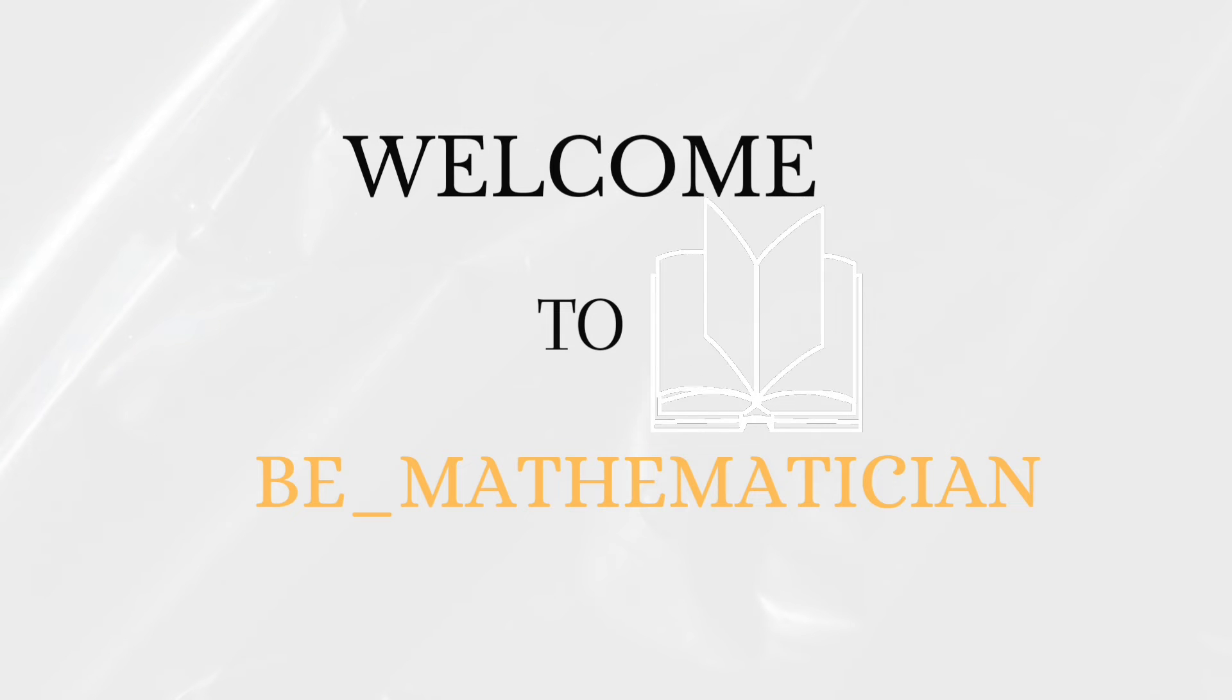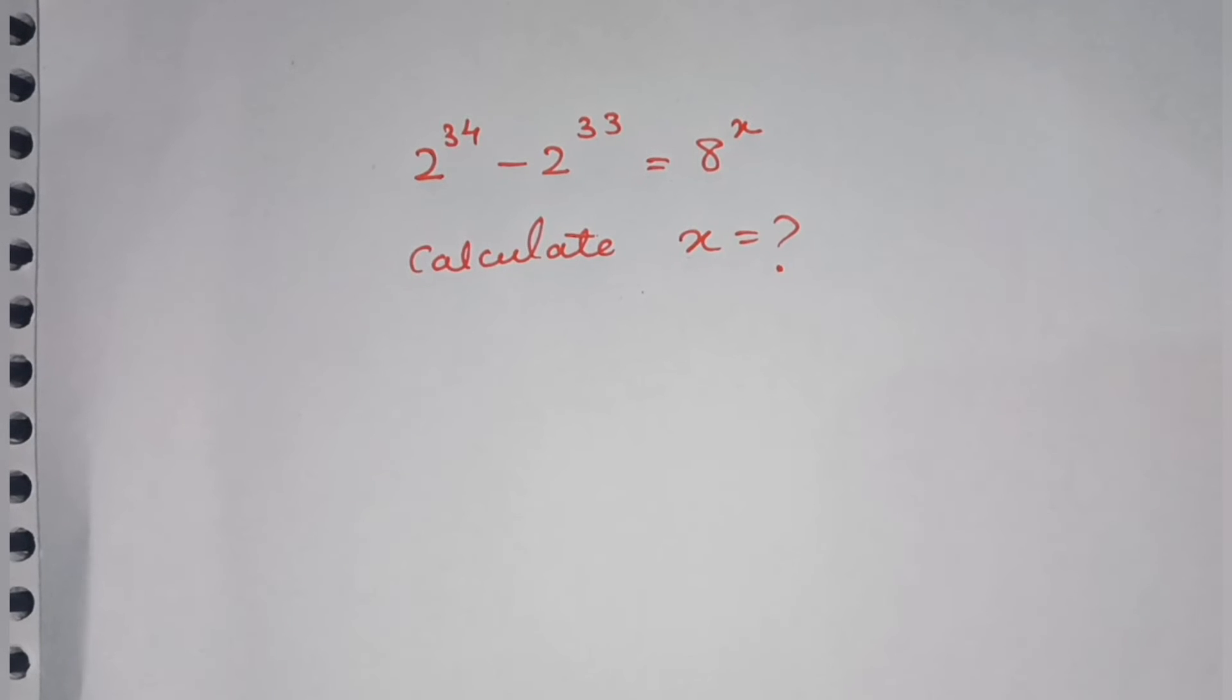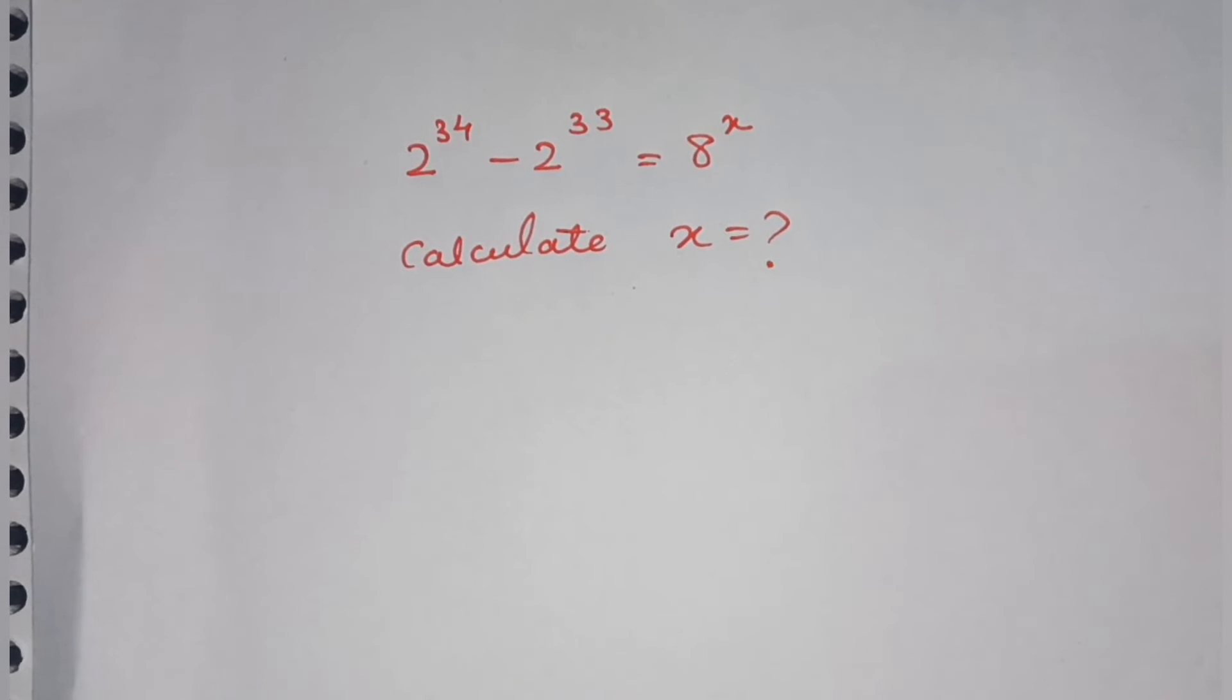Hello friends, welcome to Be a Mathematician. In today's video we are going to solve an amazing maths problem: 2 raised to 34 minus 2 raised to 33 is equal to 8 raised to x, and we have to calculate the value of x.